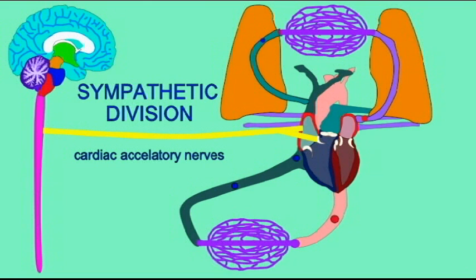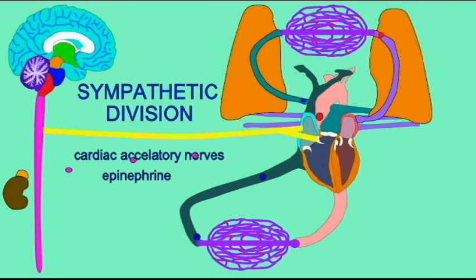to the heart where they affect the activity of the SA node, the AV node, and the conduction system of the heart increasing the rate of the cardiac cycles.